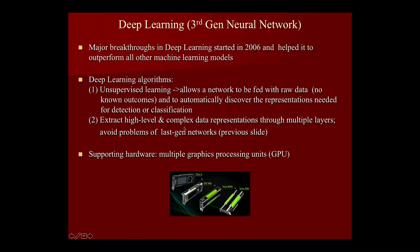The new network extracts high-level and complex data representations through multiple layers, avoiding problems of the previous generation. A key element of success for deep learning is the use of multiple graphics processing units, known as GPUs. These were previously known only for gaming, but we now know they are extremely useful for matrix multiplication using hundreds of thousands of channels.